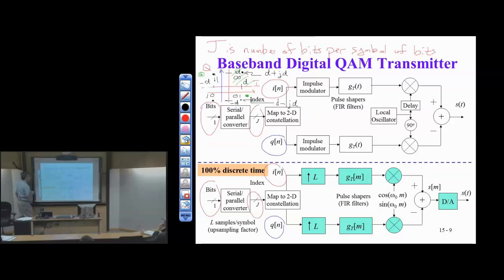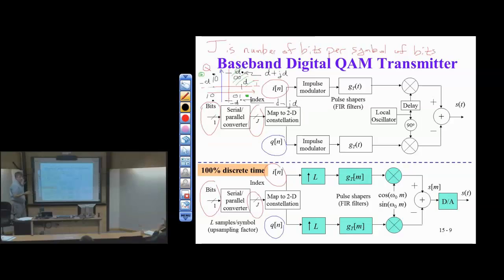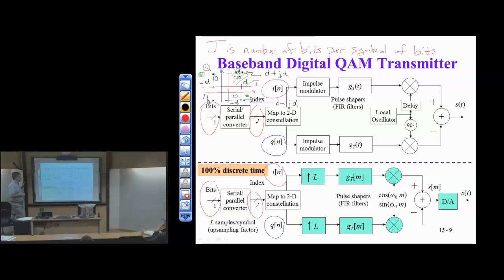For example, changing the upper-left to 1,0 means if I send D+jD but decode it as minus D+jD, I make a symbol error but only one bit error. The lower-left then becomes 1,1. Any pair of adjacent constellation points differs by only one bit. This is gray coding, and we can apply it to PAM as well — any two adjacent symbol amplitudes should differ by only one bit.